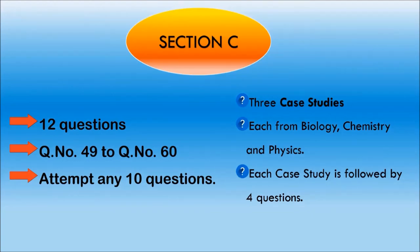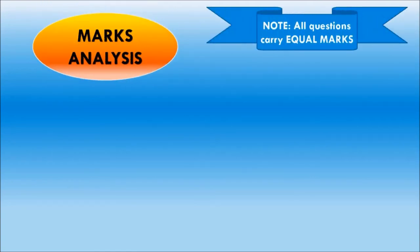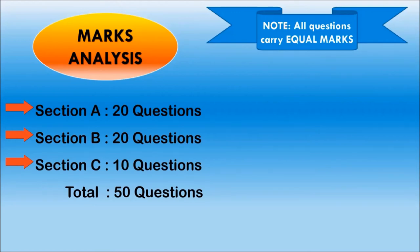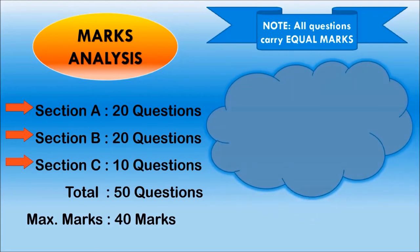Now, let's see the marks analysis. Before doing that, please note one thing: all questions carry equal marks. Now, let's do the analysis. So, Section A, you have to attempt 20 questions. Section B, you have to again attempt 20 questions. And in Section C, you have to attempt 10 questions. This makes total questions as 50 questions. And you already know the total marks is 40 marks. So, 50 questions, 40 marks. Now, you can do the math now.